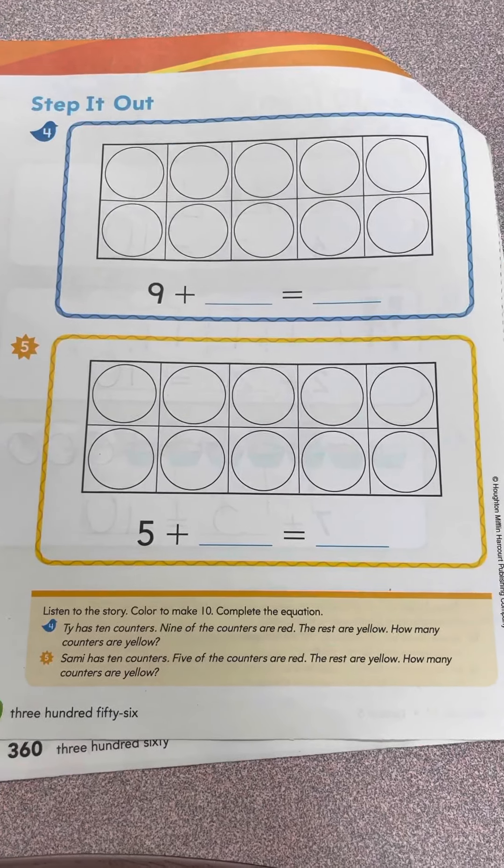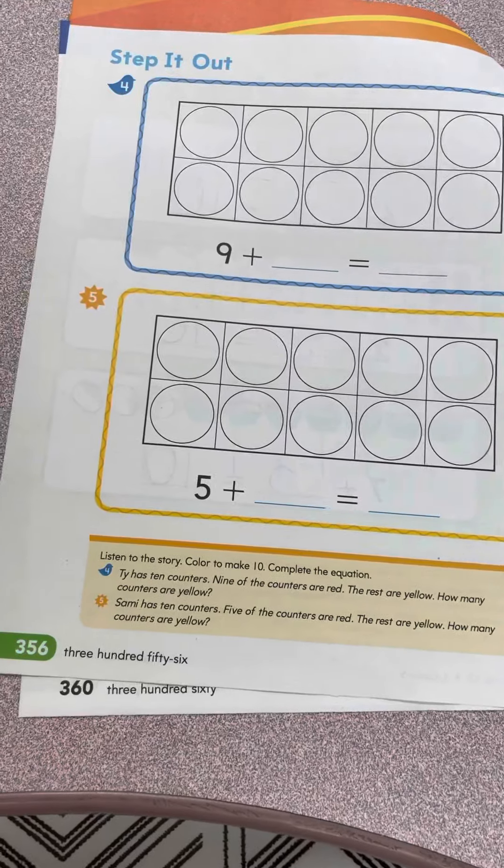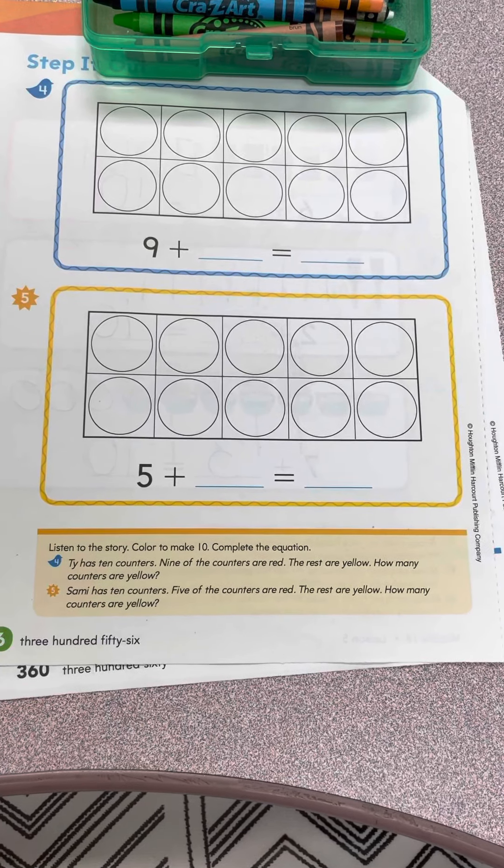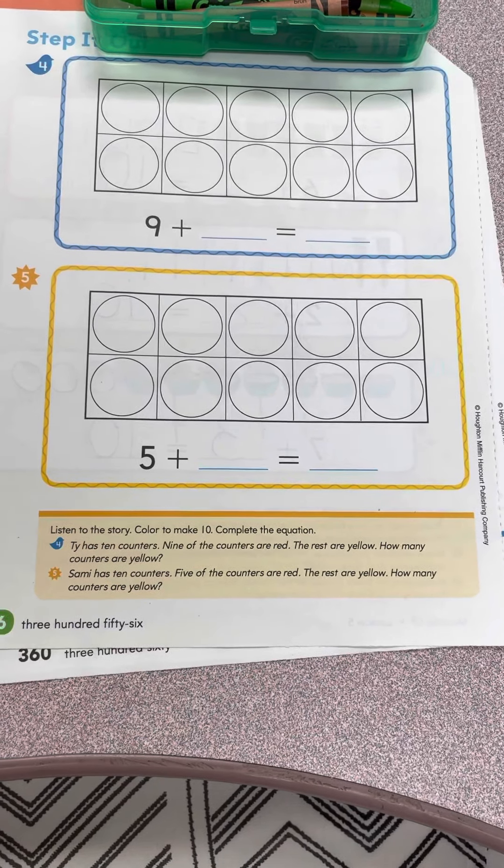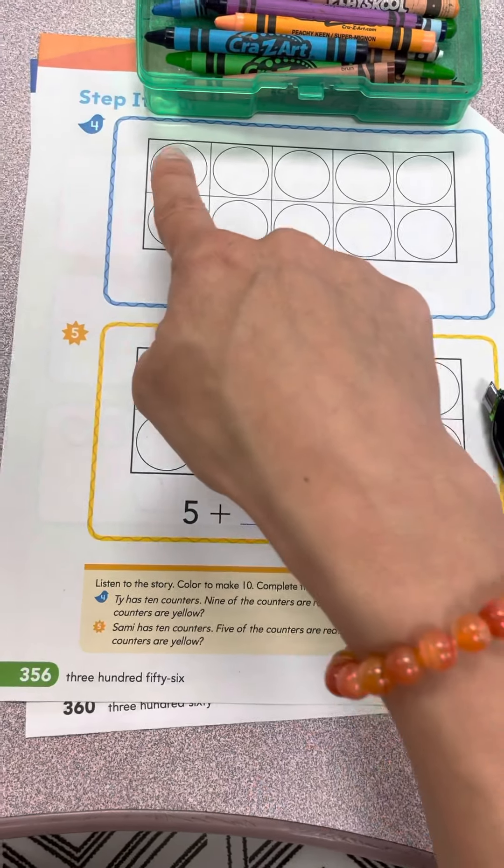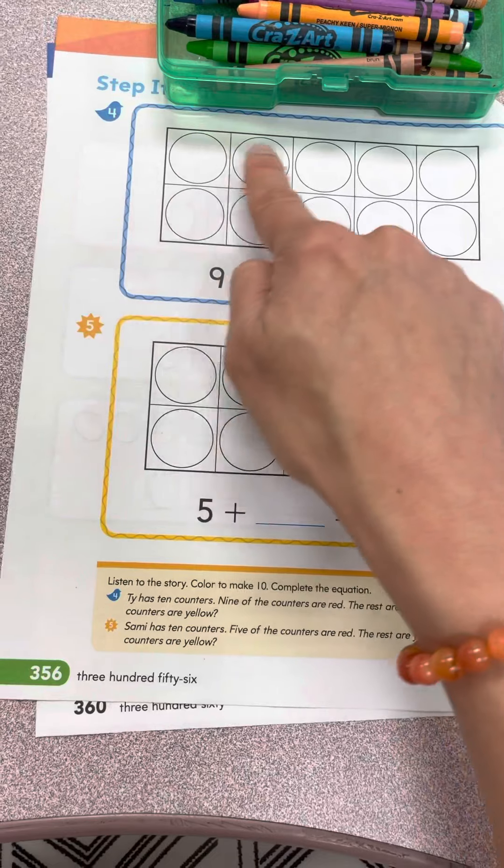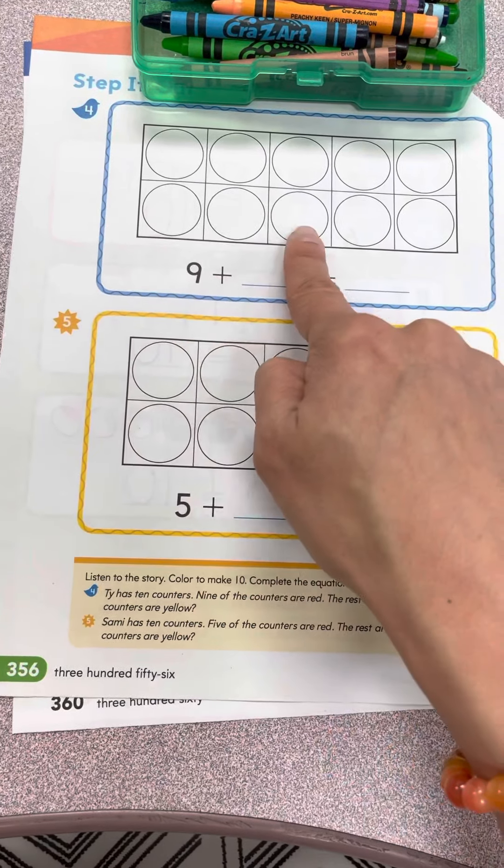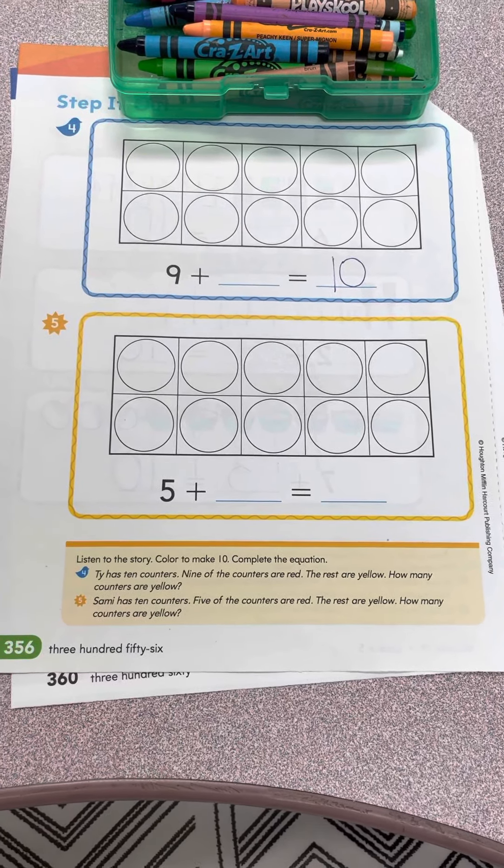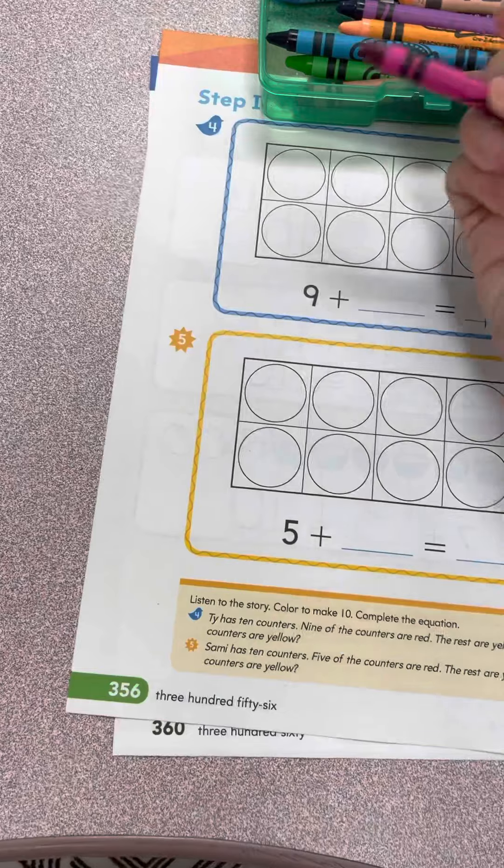Here we're going to listen to a story. You're going to color to make 10. So if we're coloring, what do we need? We need crayons. Complete the equation, that means write in the number sentence. Ty has 10 counters. Circles are another word for counters. Let's count the 10: 1, 2, 3, 4, 5, 6, 7, 8, 9, 10. So he said he had 10. 9 of the counters are red.